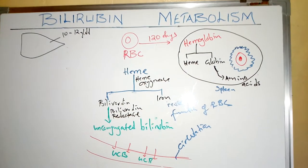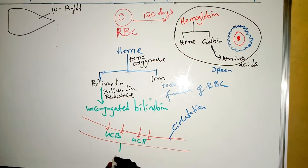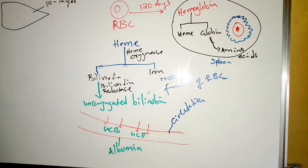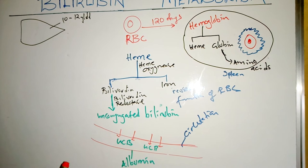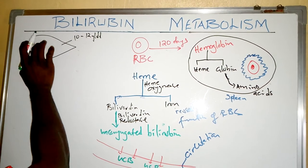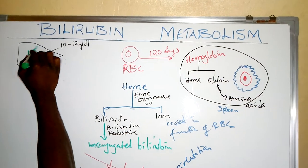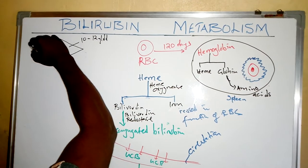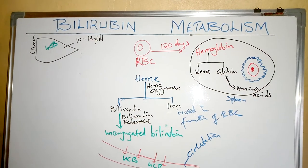This unconjugated bilirubin is going to bind to a protein called albumin for it to be transported to the liver. Once it binds to albumin, the unconjugated bilirubin will reach the liver and be taken up by the hepatocyte cells.